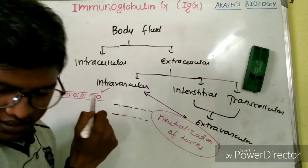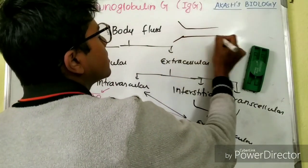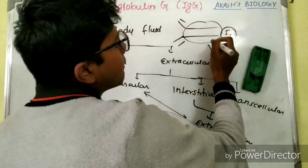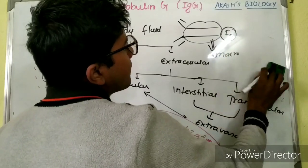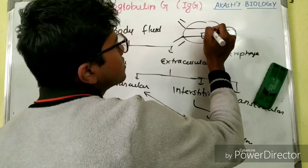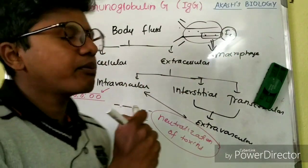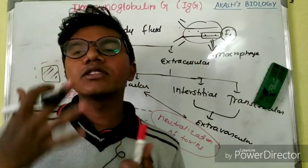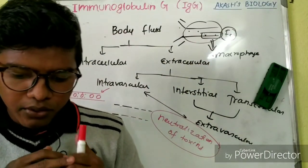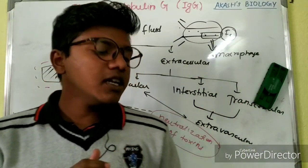The Fc receptor of IgG binds with macrophages, and the macrophages help in the phagocytosis of microorganisms. This concludes the discussion of immunoglobulin G.